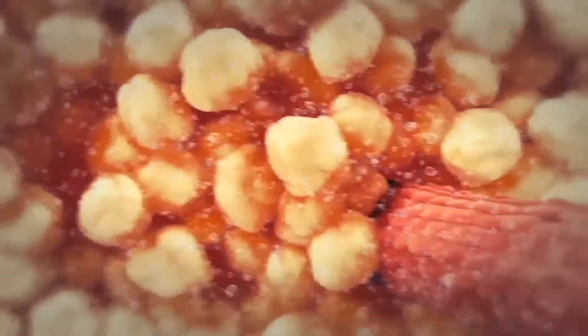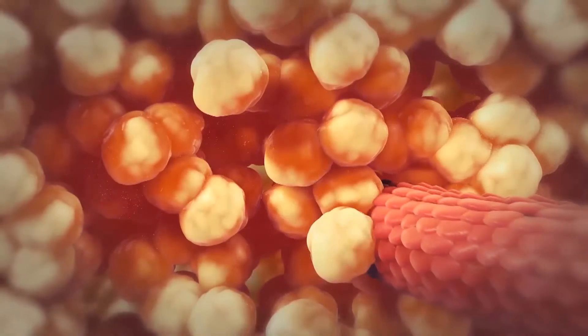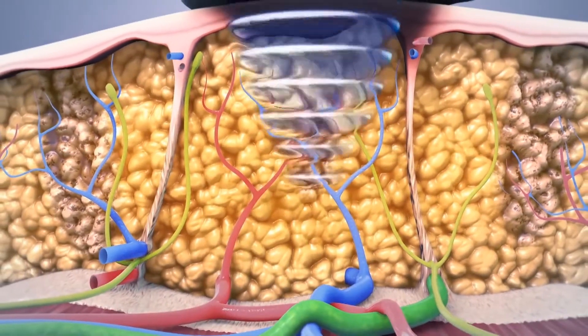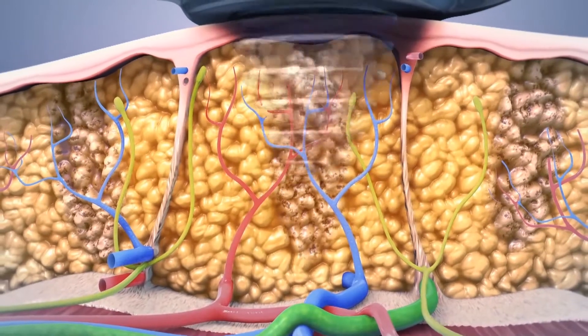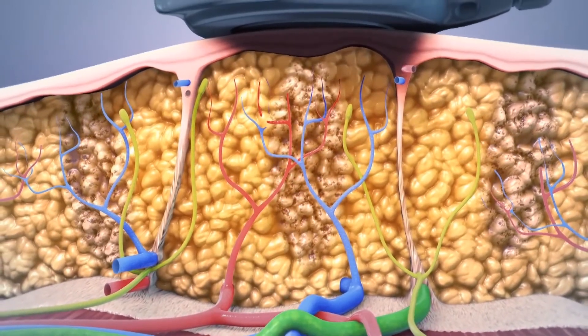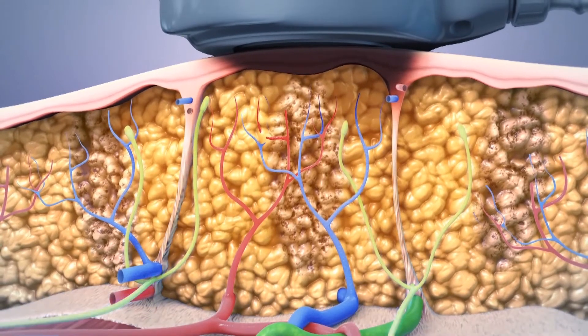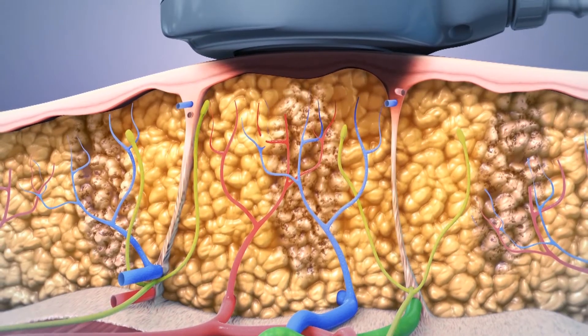UltraShape resonates at the specific frequency that most affects fat cells. As a result, the UltraShape treatment only targets fat cells, leaving surrounding tissue such as blood vessels, connective tissue, and nerves unharmed and protected.